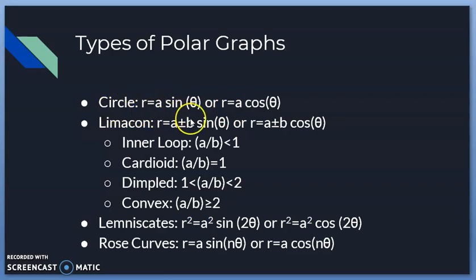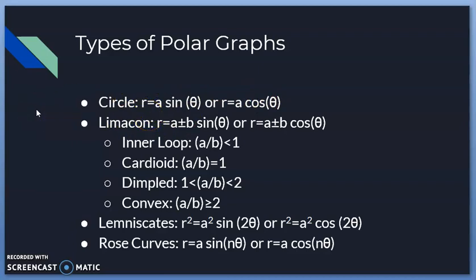For each one I'll list the sine version, but know you can replace it with cosine. For a circle, the general form is r = a·sinθ or r = a·cosθ. For limaçons, the general form is r = a ± b·sinθ (or cosine). There are four types of limaçons, and the values of a and b determine which type.